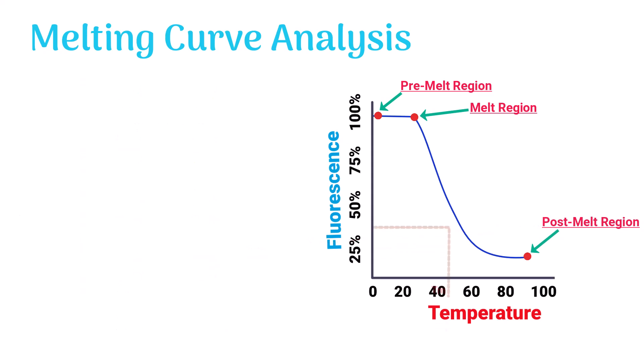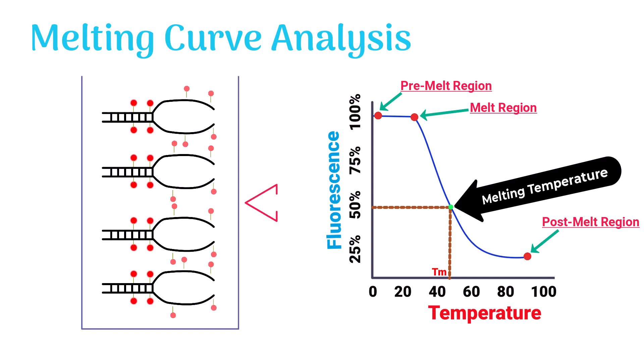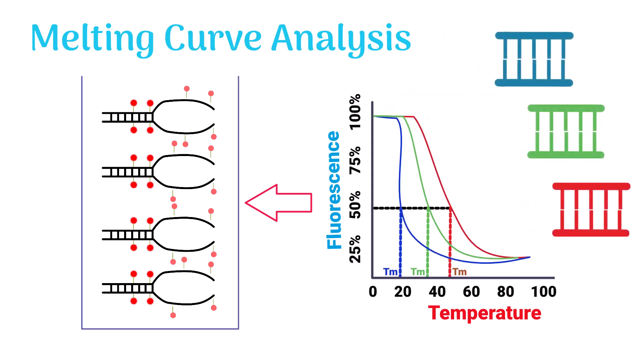Melting temperature means the specific temperature at which the fluorescence of dyes was left 50%. Remember, different DNA strands have different melting temperatures.